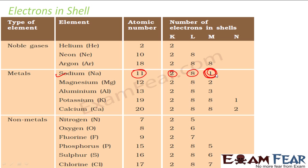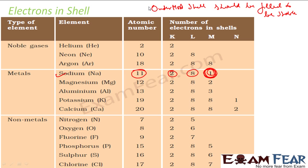The M shell has 1 electron. The rule is that the outermost shell should be filled to be stable — generally 8 or 0. M can hold a maximum of 8, L can hold 8, K can hold 2. So for sodium to become stable, it has to either get 7 more electrons or lose this 1 electron and let the next shell become the outermost.